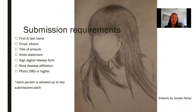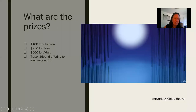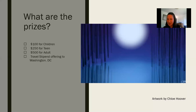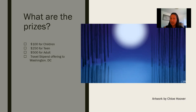Prizes are dependent on the age group: $100 for the children's category, $250 for teen, and $500 for adult. In addition to those cash prizes, we also offer a travel stipend to help get you to Washington, DC for Rare Disease Week on Capitol Hill and the Rare Artist Reception.